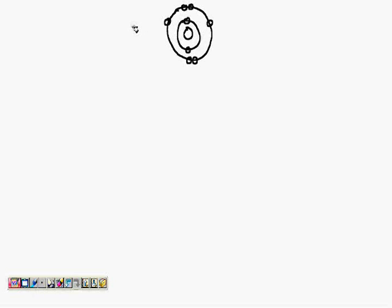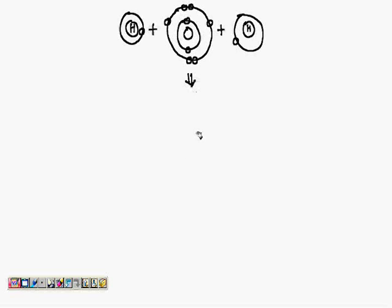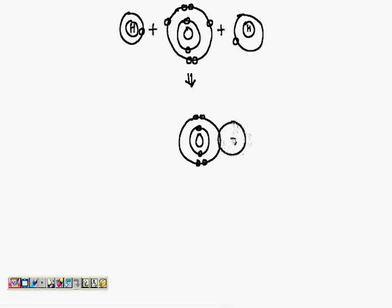Now I'll draw the hydrogen atom on this side — the hydrogen atom has only one electron in its orbit. The same way, another hydrogen atom on the other side also has only one electron. I'll put a plus sign because all these are combining together. I'll draw the oxygen atom again in the middle with two electrons in the first orbit.